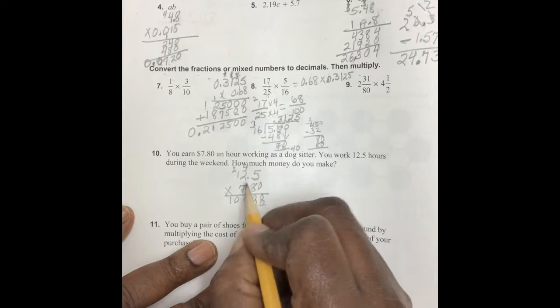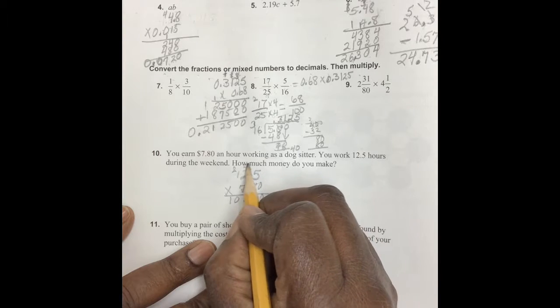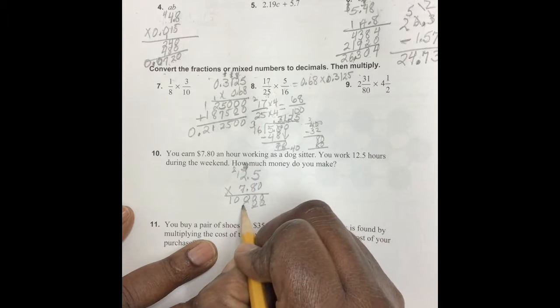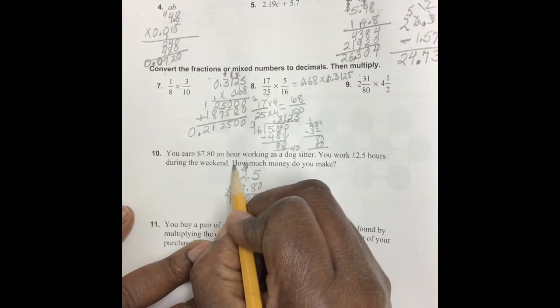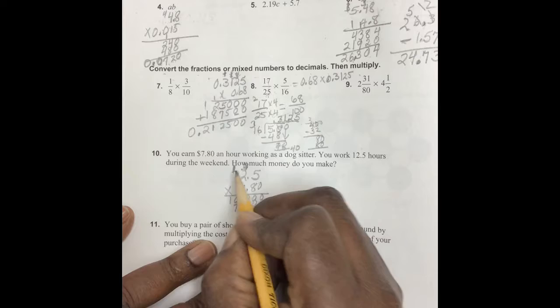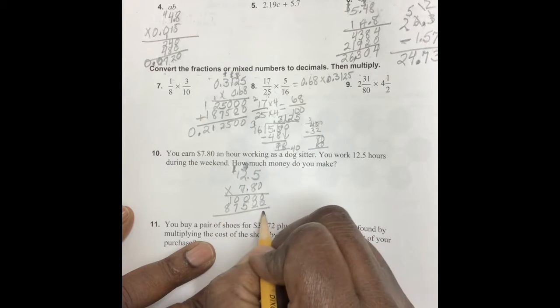Seven times five is 35, seven times two is 14 plus three is 17, and seven times one is seven plus one is eight. And we add.